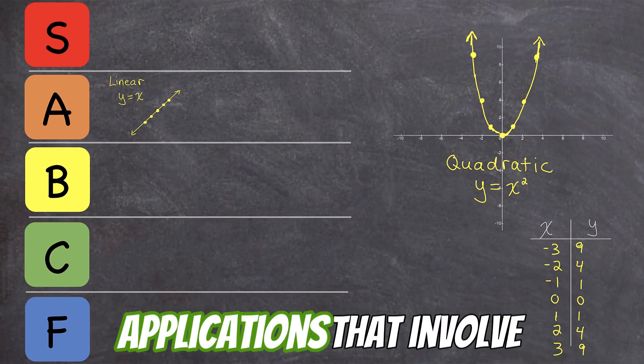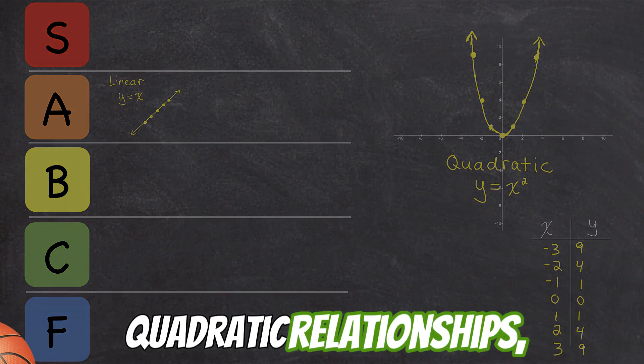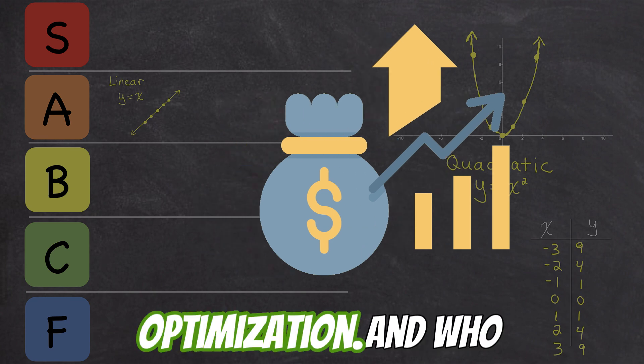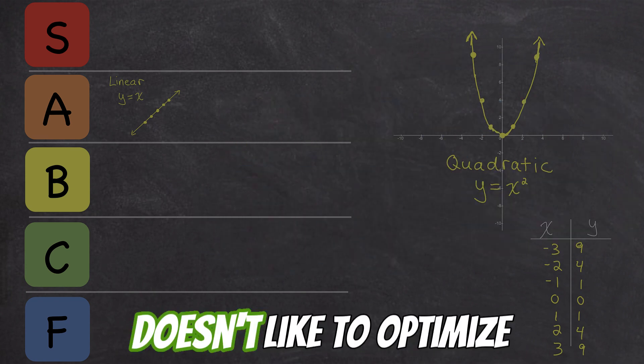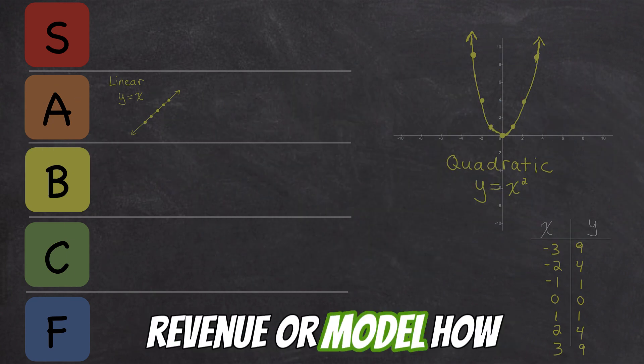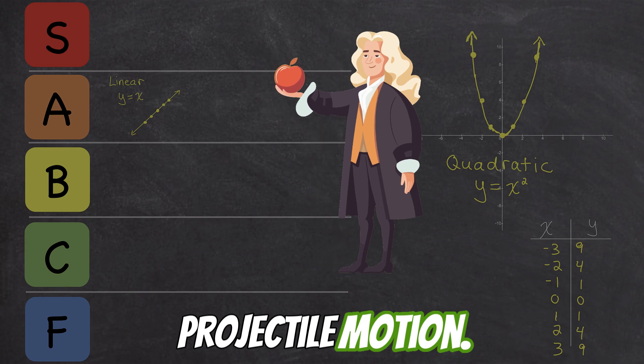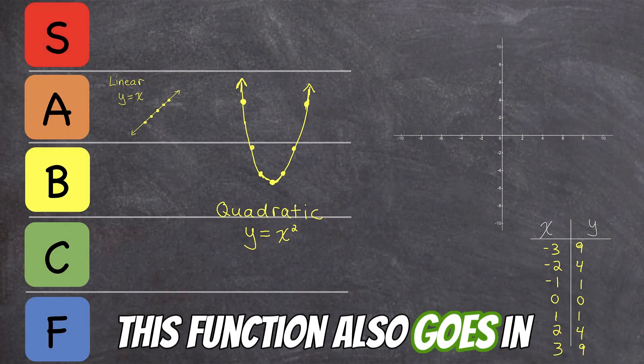There are lots of applications that involve quadratic relationships, including projectile motion and revenue optimization. And who doesn't like to optimize revenue or model how gravity affects a projectile's motion? This function also goes in A-tier.